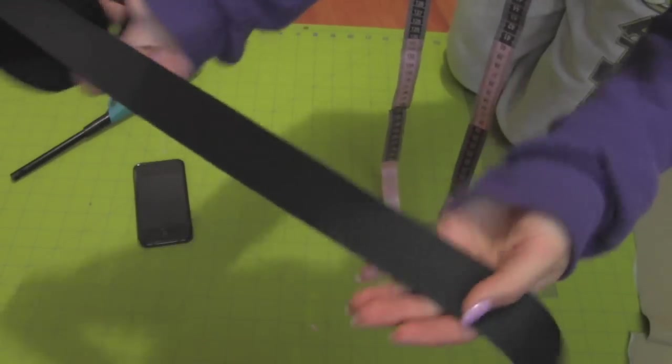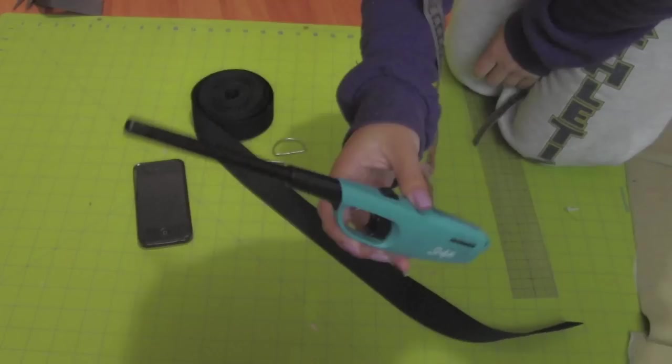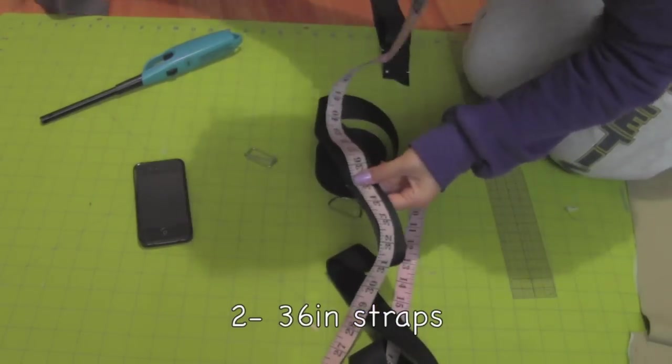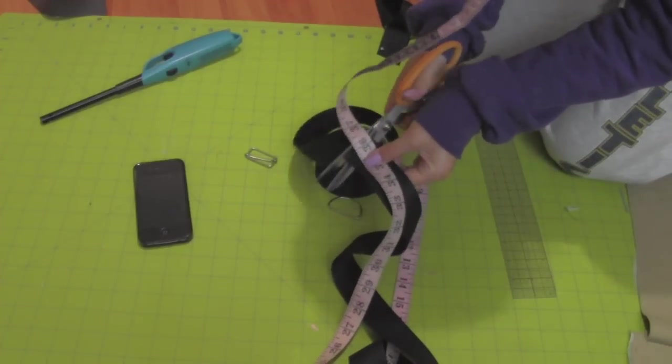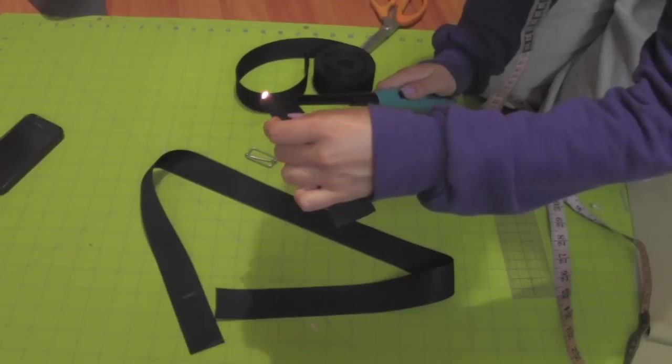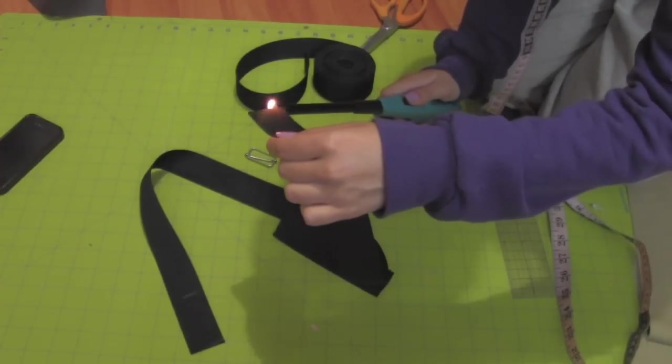Take some strap material, strap loops and a lighter to create your straps. Cut 2 36 inch strips. Now cut 2 6 inch strips for the bottom of the strap. Burn all the ends to prevent fraying.